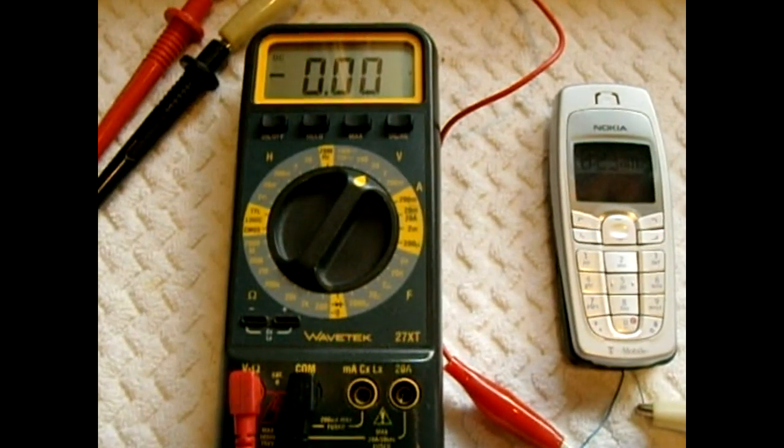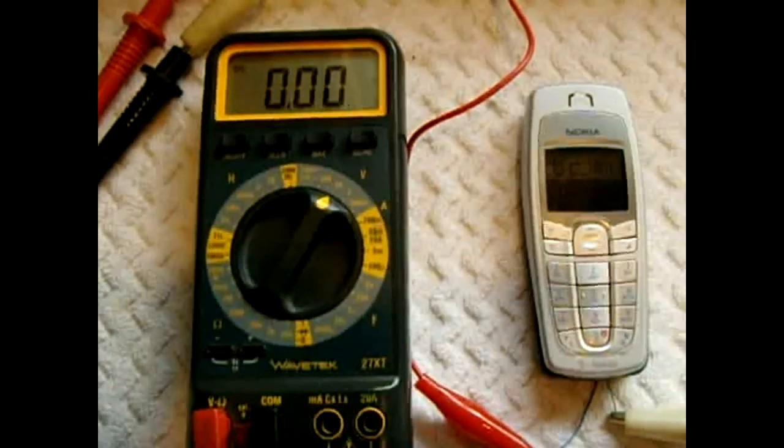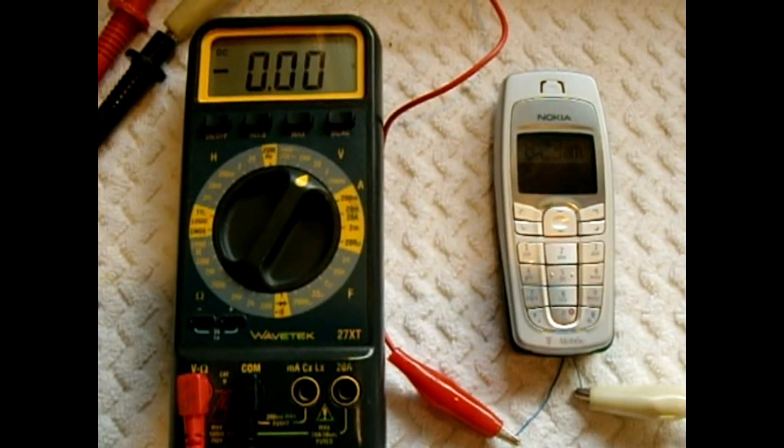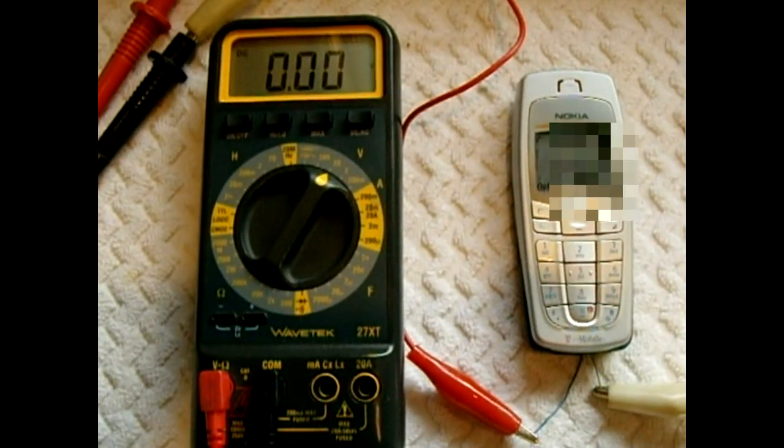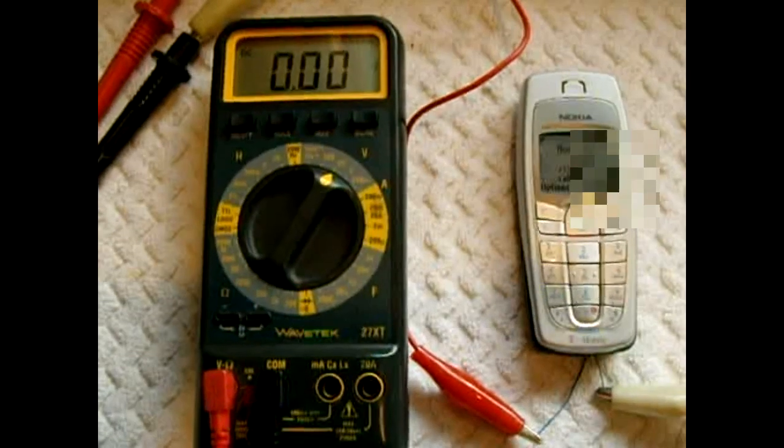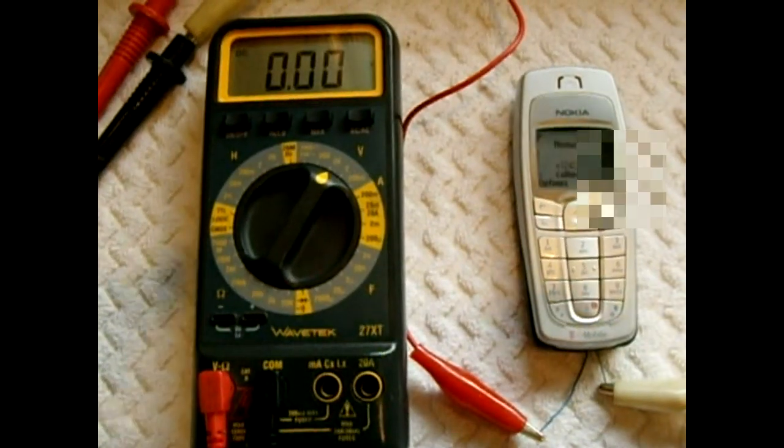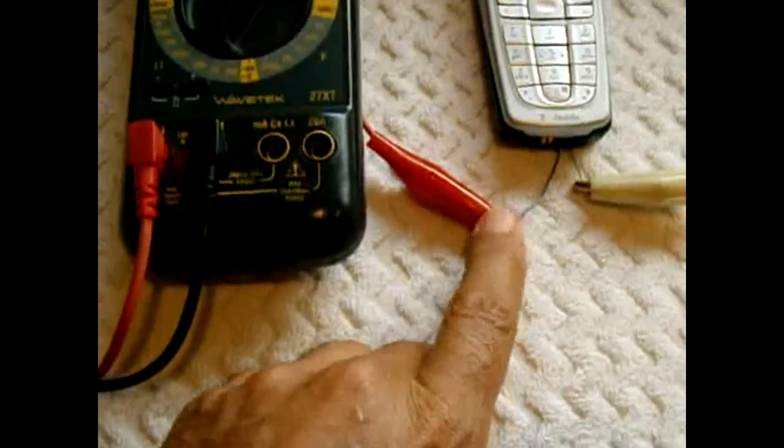There you go, pulses of 1.32 volts, perfect. So this red wire's in the right spot going to the red probe. This is positive.